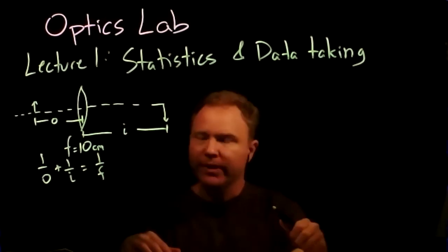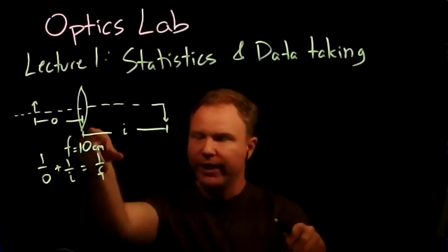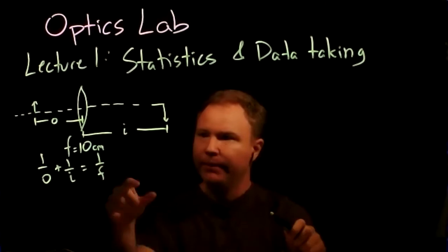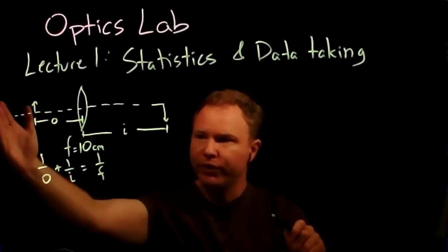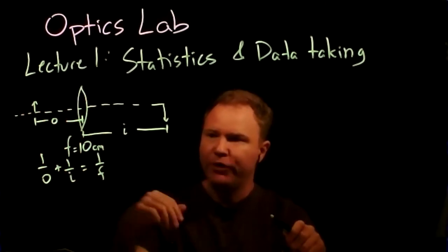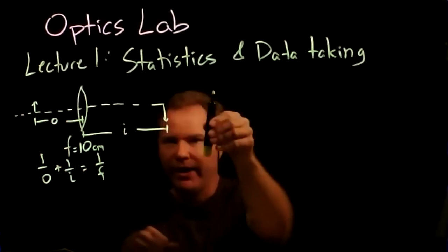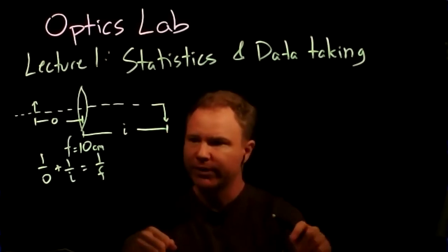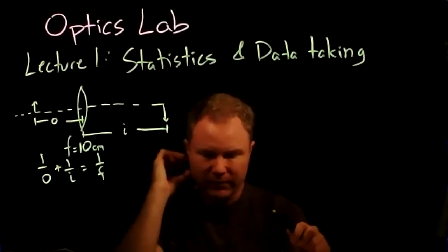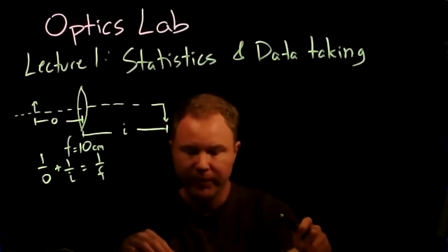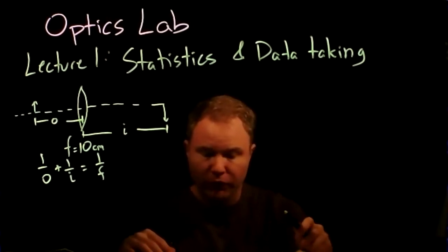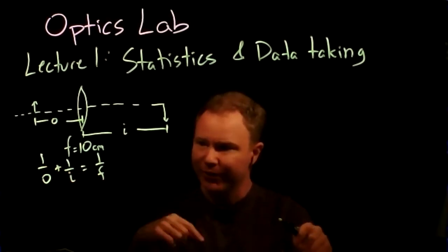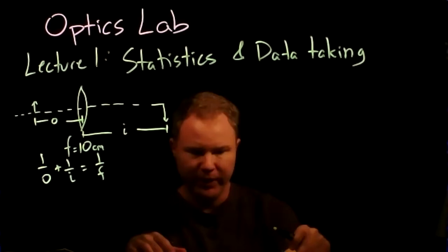One of the things you do on the first day is take a lens, measure its focal length by taking an object and putting it at a bunch of different object distances, and measure with a camera the distance at which it comes into focus. You want to verify this relationship. The first thing to point out is that this relationship is not linear — there are 1/O and 1/I terms.